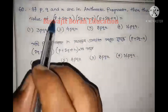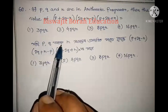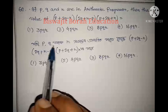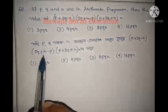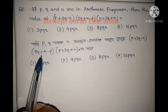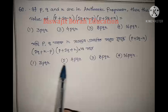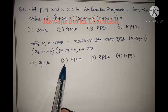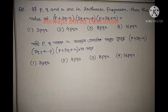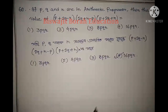Our traffic prices are 9. P plus Q, Q plus R, R is the same property as P plus Q into Q plus R minus P, whole into P plus Q, Q plus R. The options are: 1) 3PQR, 2) 4PQR, 3) 8PQR, 4) 16PQR. The answer is 16PQR.